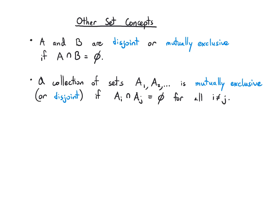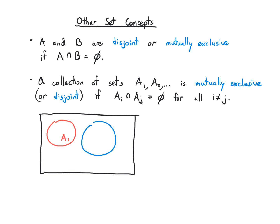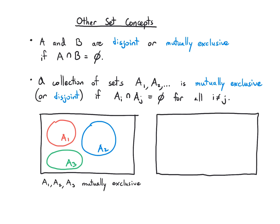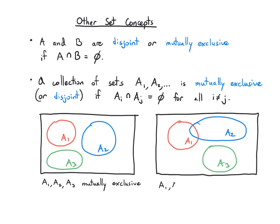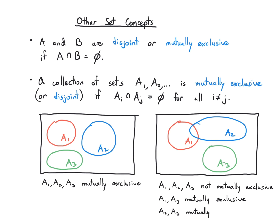Visually, for three sets that are mutually exclusive, they don't overlap at all. If they're not mutually exclusive, it means at least one pair overlaps — so if A1 and A2 overlap, the collection A1, A2, A3 is not mutually exclusive, although A1 and A3 are mutually exclusive, as well as A2 and A3, because neither of those pairs overlap. But the whole collection A1, A2, A3 is not mutually exclusive.